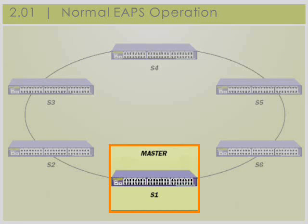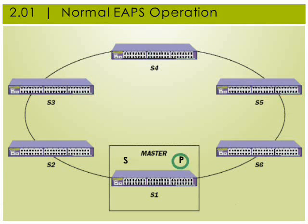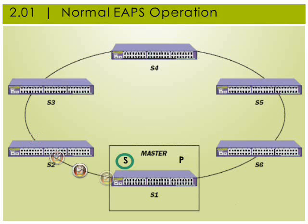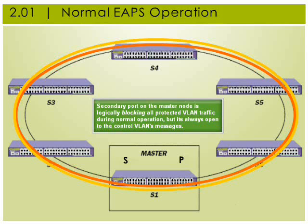There is one master node and five transit node Extreme switches in this ring. The master node is configured with a primary and secondary port. The primary port sends EAPS health check messages around the ring every second in a counterclockwise direction towards the secondary port. When these health checks are received on the secondary port, verifying the ring is up and operational, the master node resets its fail period timer and continues normal operation. All transit ports are in a forwarding state, transmitting tagged data traffic via their protected VLAN configuration and EAPS control messages via their control VLAN. The secondary port on the master node is logically blocked to tagged data traffic in order to prevent loops on the protected VLANs.